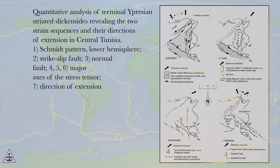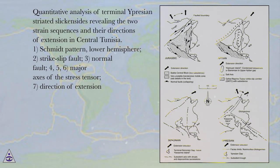Quantitative analysis of terminal Uprisian striated slick insides revealing the two strain sequences and their directions of extension in Central Tunisia. Legend: 1. Schmidt pattern, lower hemisphere; 2. strike-slip fault; 3. normal fault; 4, 5, 6. major axes of the stress tensor; 7. direction of extension.